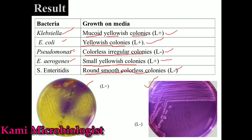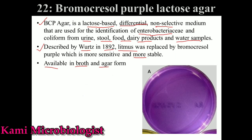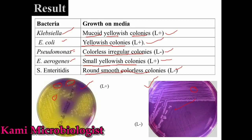To differentiate between them: Klebsiella mostly forms mucoid, sticky-like colonies, while E. coli forms large yellowish colonies — not mucoid. Enterobacter can produce similar colonies to E. coli but the size is smaller. Pseudomonas produces colorless irregular colonies, and Salmonella and Shigella mostly produce round smooth colorless colonies. This is all about the Bromocresol Purple Lactose Agar Medium.